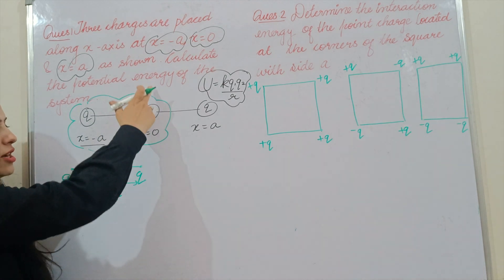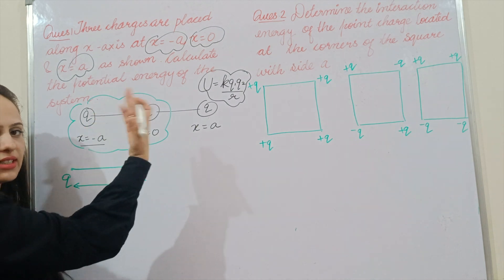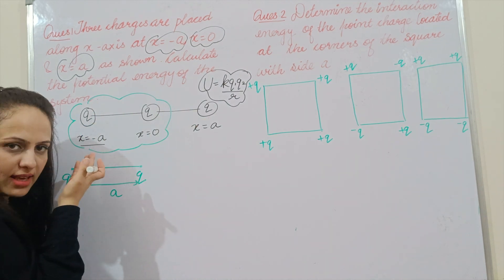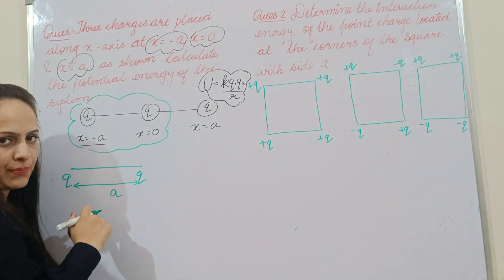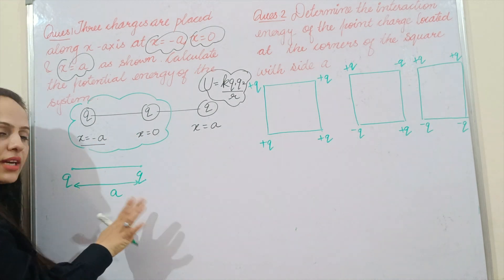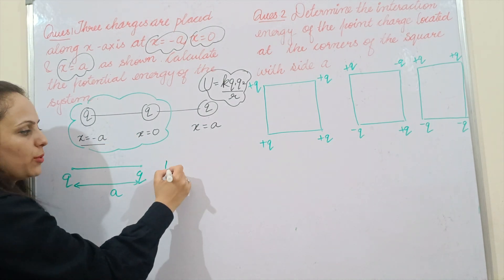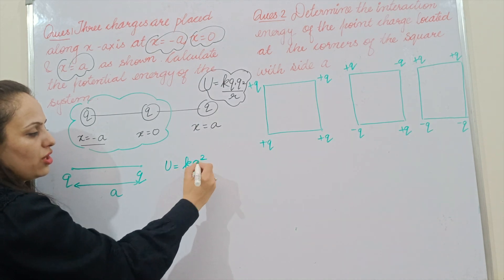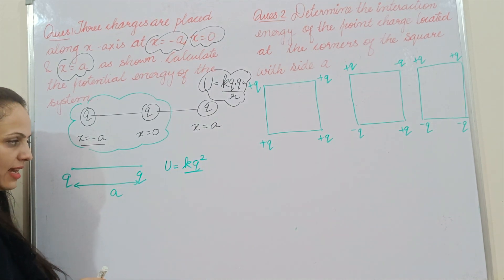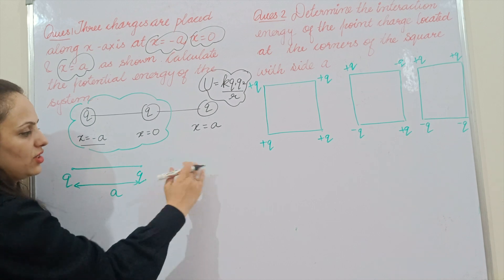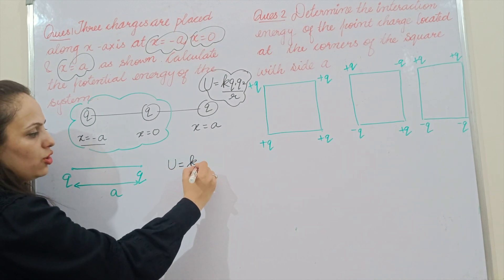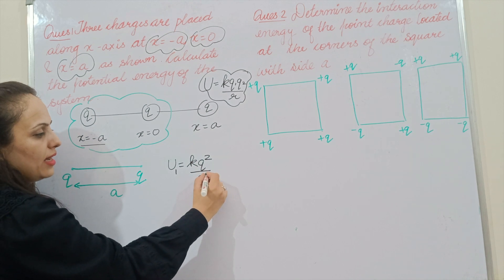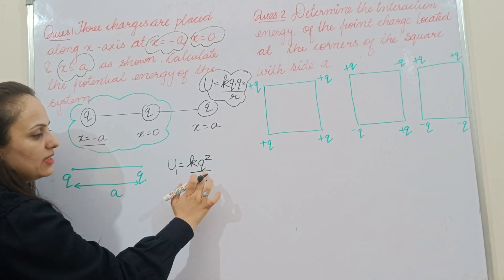This is the x-axis; this is the origin, this is the negative x-axis, this is the positive x-axis. The charge at -a and the charge at origin — the distance from -a to 0 is a. So the potential energy of this first combination, U1, equals kq²/a.